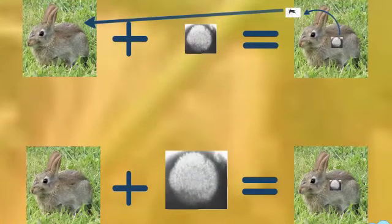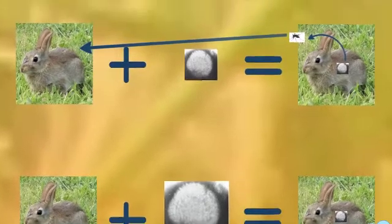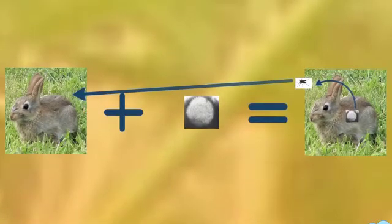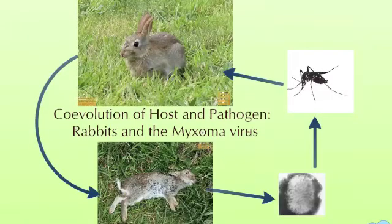Rabbits who won the genetic lottery and had some resistance to the virus could survive a weak or strong virus long enough to reproduce, passing on their resistant genes. So the attenuated viral strain was naturally selected for, as were the resistant rabbits. A balance was achieved — the weaker virus could continue being spread and infecting, while the stronger rabbits lived long enough to produce offspring. Overall, both participants evolved with each other to continue their life cycles, and they will continue to act as a check in the evolutionary cycles of each other.